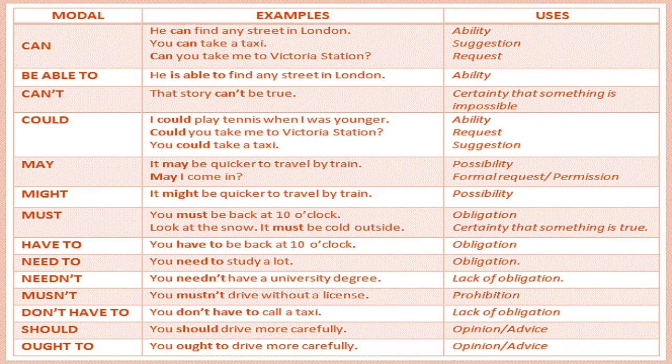May: 'It may be quicker to travel by train' (possibility); 'May I come in?' (formal request or permission). Three main uses of may: possibility, formal request or permission, and expressing wish or prayer. Might: 'It might be quicker to travel by train' — once again possibility, but might expresses weaker possibility than may.